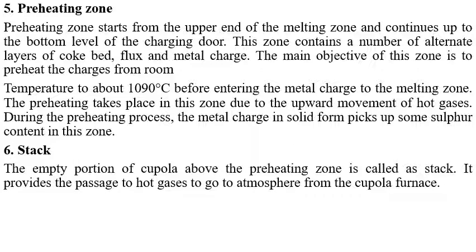The preheating zone starts from the upper end of the melting zone and continues up to the bottom level of the charging door. This zone contains alternating layers of coke, flux, and metal charge. The main purpose is to preheat the charge from room temperature to about 1090°C before it enters the melting zone, due to the upward movement of hot gases.